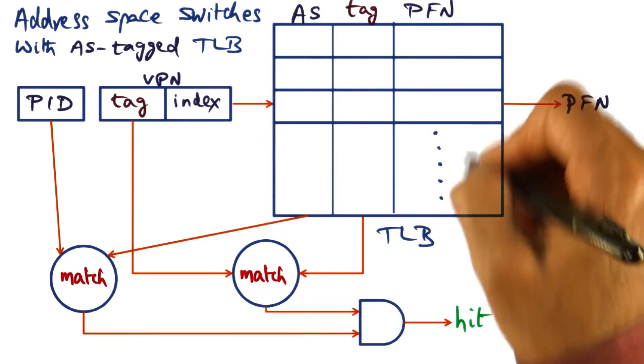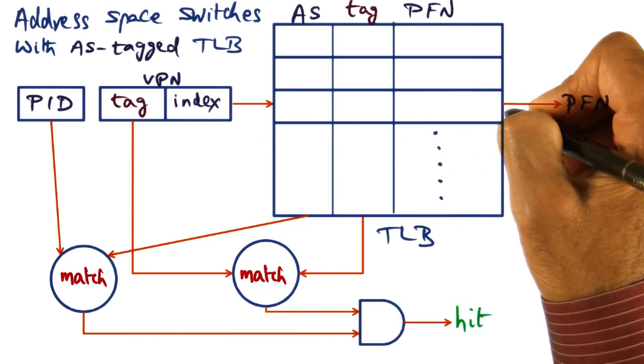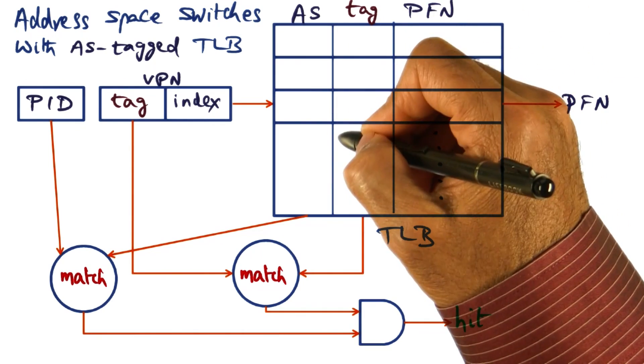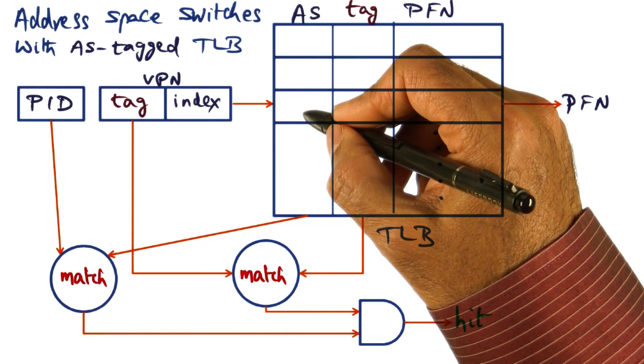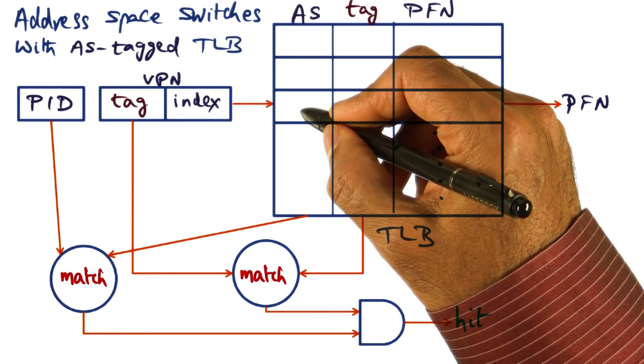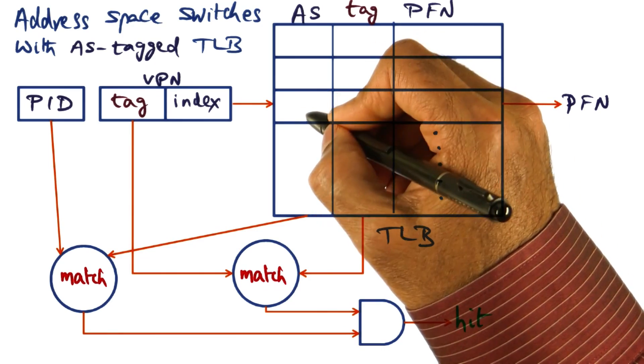The index part lets us look up a particular entry in the TLB. From the TLB we get two tags. One tag is the address space tag, signifying which process created this entry.